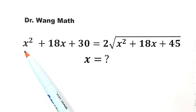But check this out. You see, both sides have x squared plus 18x. So this is our clue for an easier method.